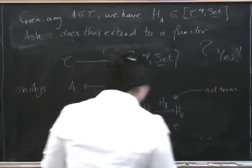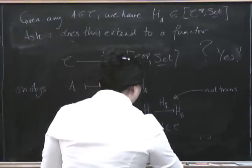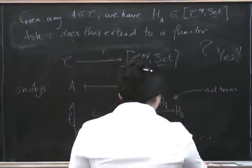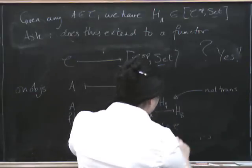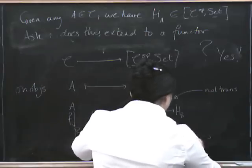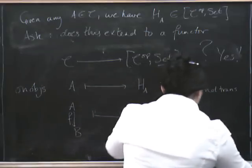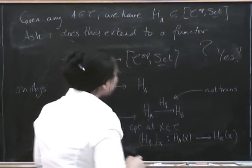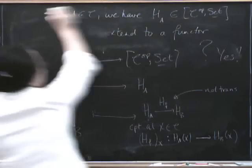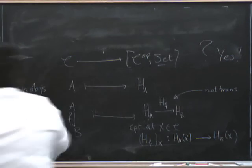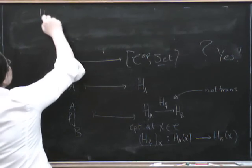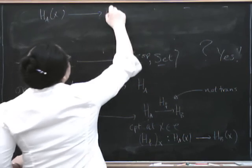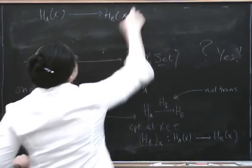So the component at X in C, we've got to have H sub F has to have a component at X which takes us from this functor applied to X to this functor applied to X. But what are those? Now I feel like I've run out of space. So I'm going to go up here. Here, we're trying to go from H sub A applied to X to H sub B applied to X.